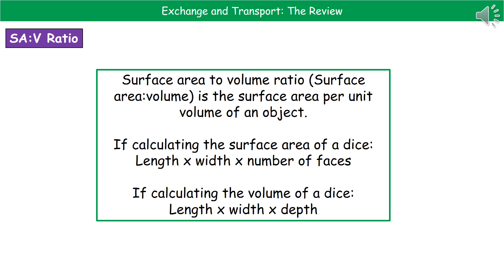If we think back to our maths lessons with simple shapes like a dice, to calculate the surface area you do the length times the width of one face and then multiply by the number of faces, which in a dice is six. To work out the volume, it's the length times the width times the depth. Make sure you know how to do that, because they could give you little cubes and ask you to work out surface area to volume ratio — calculate the surface area, then the volume, then put them into ratio format and simplify.